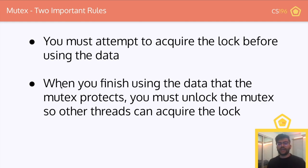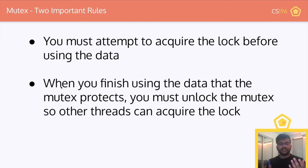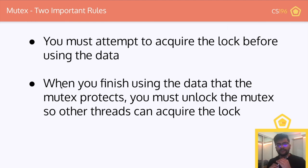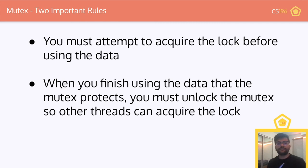In terms of code: if you have multiple threads running the same line, whoever gets done first can take the mutex, lock it, do whatever they want with it, and once they're done, unlock it so other threads can access it. If another thread tries to access the mutex while it's already locked, it'll block on that line and wait indefinitely until the current thread unlocks it. Once the mutex is unlocked, all threads try to go for it — and thankfully only one of them can get access at a time. This protects our data from having multiple people changing it simultaneously.